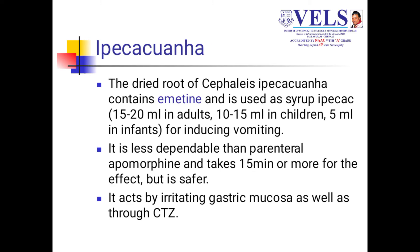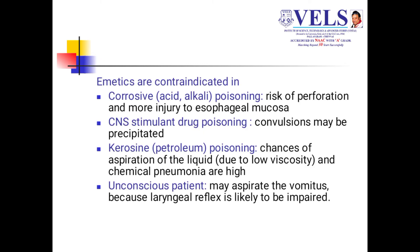Ipecac is a dried root of Cephaelis ipecacuanha and contains emetine as its active chemical constituent. It is used as syrup of ipecac: 15–20 mL in adults, 10–15 mL in children, and 5 mL in infants to induce vomiting. It is less dependable than parenteral apomorphine and takes 15 or more minutes to produce effect, but it is safer. It acts by irritating the gastric mucosa as well as the CTZ.